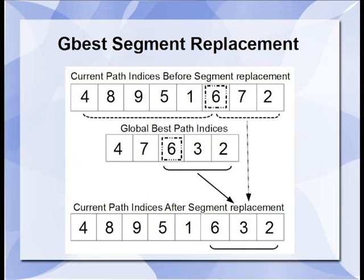The g-best segment replacement function works by finding common nodes between the current path and g-best. Choosing this node essentially splits the current path in half, the part before this node and the part after. The algorithm chooses the smaller half and replaces it with the corresponding partial path from g-best.